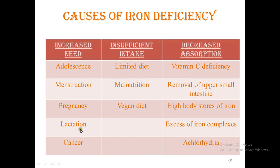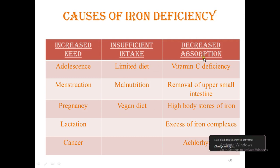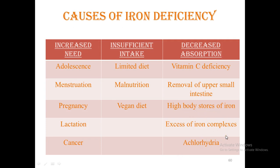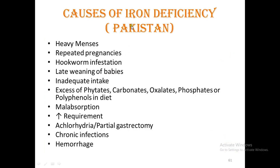Causes of iron deficiency include increased need — as in adolescent or menstruating women, pregnant women, lactating women, or people with cancer losing blood from a cancerous tumor; insufficient intake from a limited diet, malnutrition, or a vegan diet; and decreased absorption — due to vitamin C deficiency, removal of the upper small intestine, high body stores, excess iron complexes, or achlorhydria. Major causes in Pakistan are heavy menses, repeated pregnancies, hookworm infestation, late weaning of babies, inadequate dietary intake due to poverty, excess phytates, carbonates, oxalates, phosphates, or polyphenols in the diet (such as excess tea and fiber), malabsorption, achlorhydria, partial gastrectomy, and chronic infections.